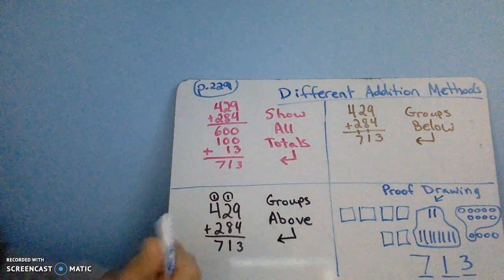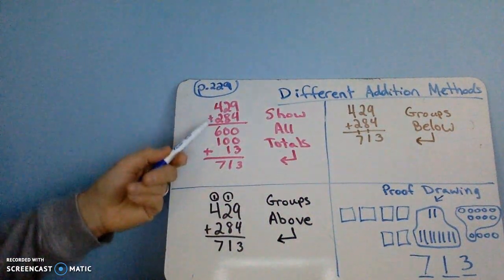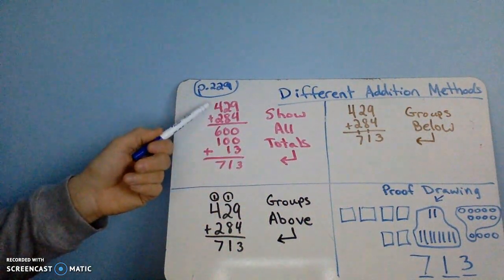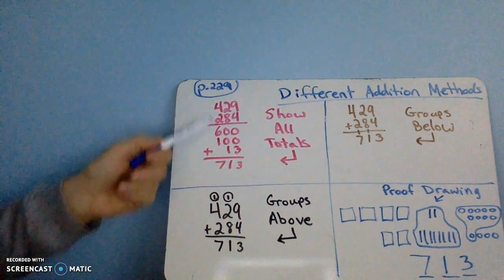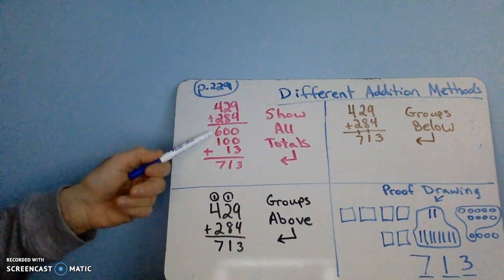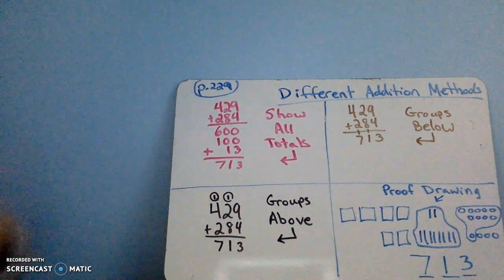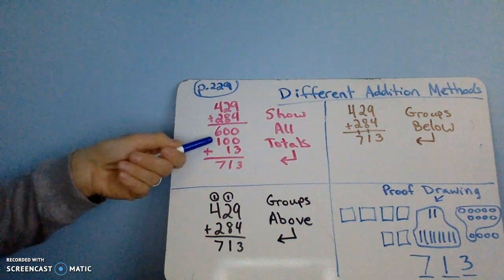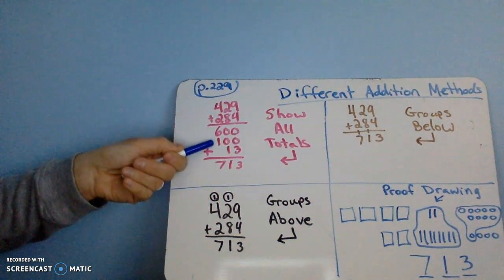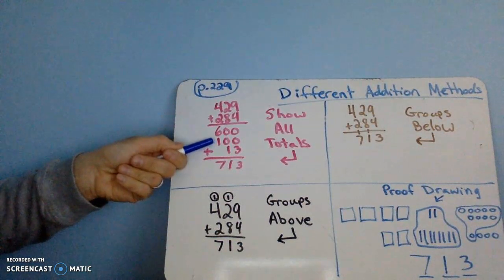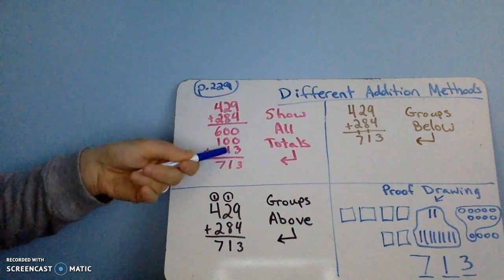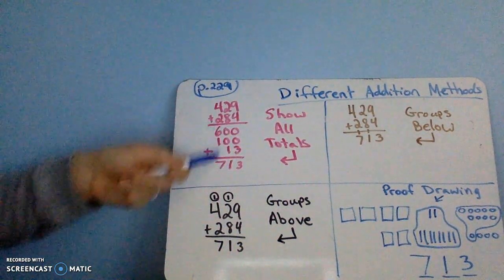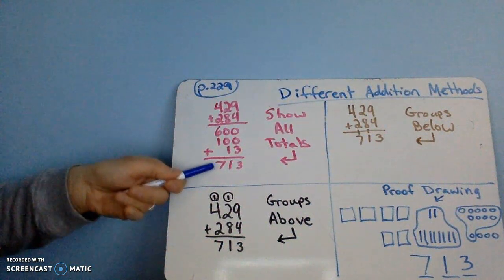So page 229, I'm using my own numbers: 429 plus 284. This is a method called Show All Totals. What you do is, since this is in the hundreds, you take your hundreds — which there are 4 and 2 of — and you put them below at 600. Then you take your tens, which there are 2 tens and 8 tens. In this case, 10 tens is 100. Then you take your ones: 9 plus 4 equals 13, which is actually a 10 and 3 ones. You just add going straight down as usual and you get a total of 713.